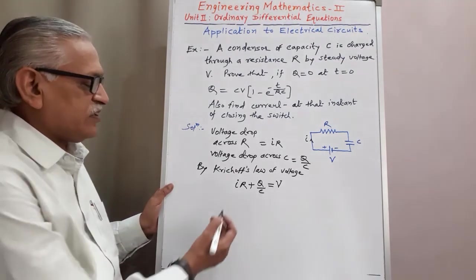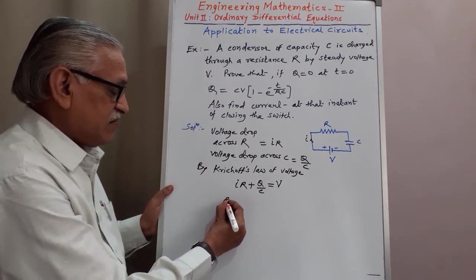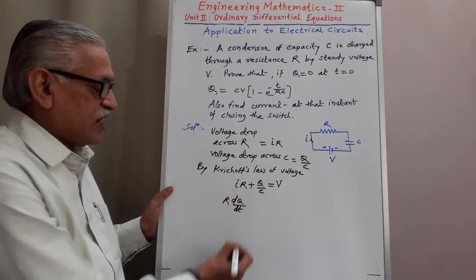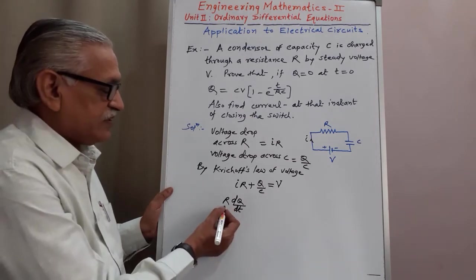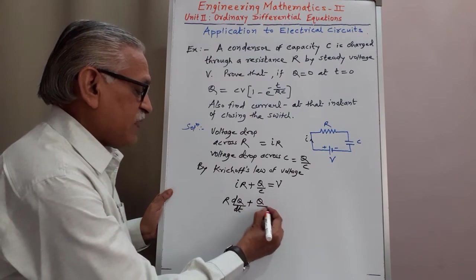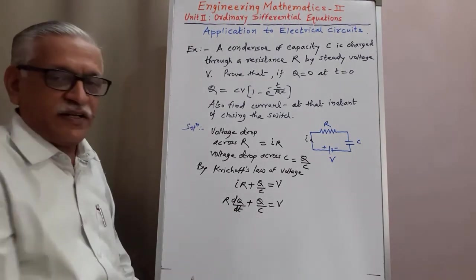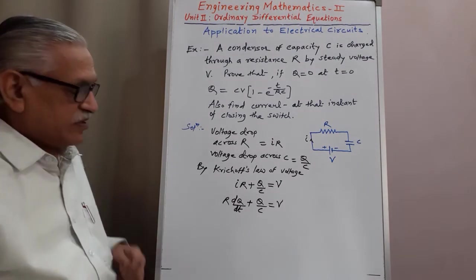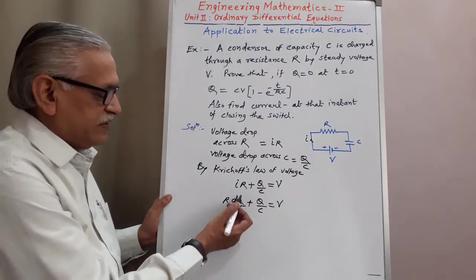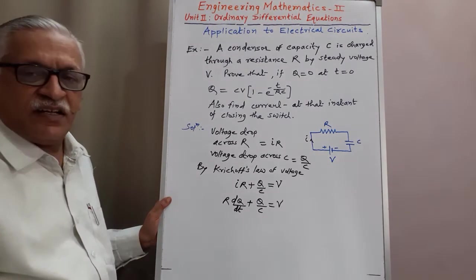Therefore, to get the differential equation, we rewrite current I as dQ by dt — the rate of change of charge with respect to time t. Replacing I by dQ/dt, we get: dQ/dt plus Q by C equals V. Since we have the differential coefficient dQ/dt, this is a differential equation with Q as dependent variable and t as independent variable. The degrees of Q and dQ/dt are both 1 and not multiplied together, so this is a linear equation in Q.